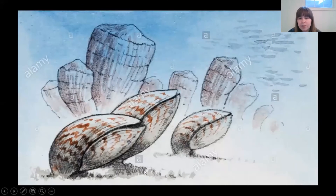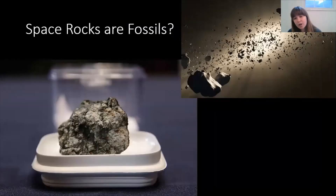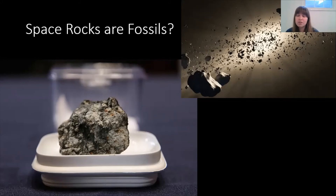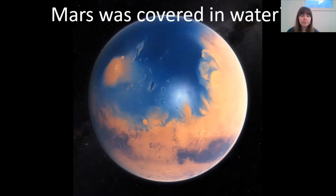Earth is actually not the only place you can find fossils — you can also find fossils in space. This meteorite was found in the Sahara Desert and turned out to be 4.6 billion years old, basically as old as the entire solar system, making it one of the first space rocks ever formed. It helped tell us a lot about how space rocks first started forming in the early years of our solar system.